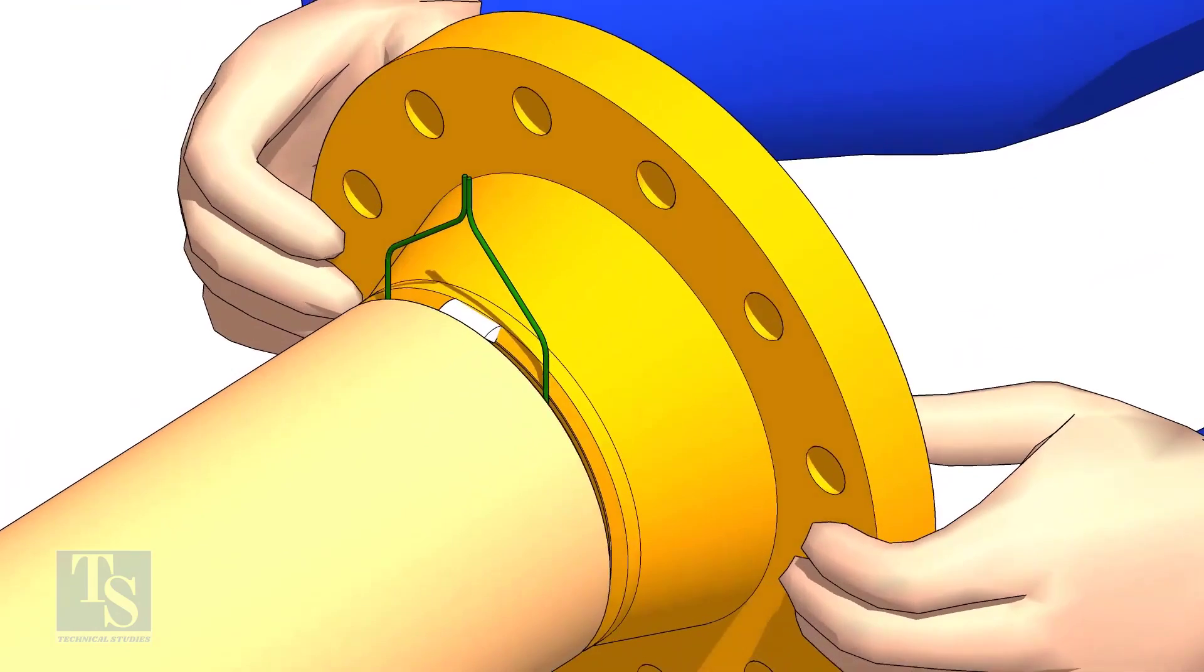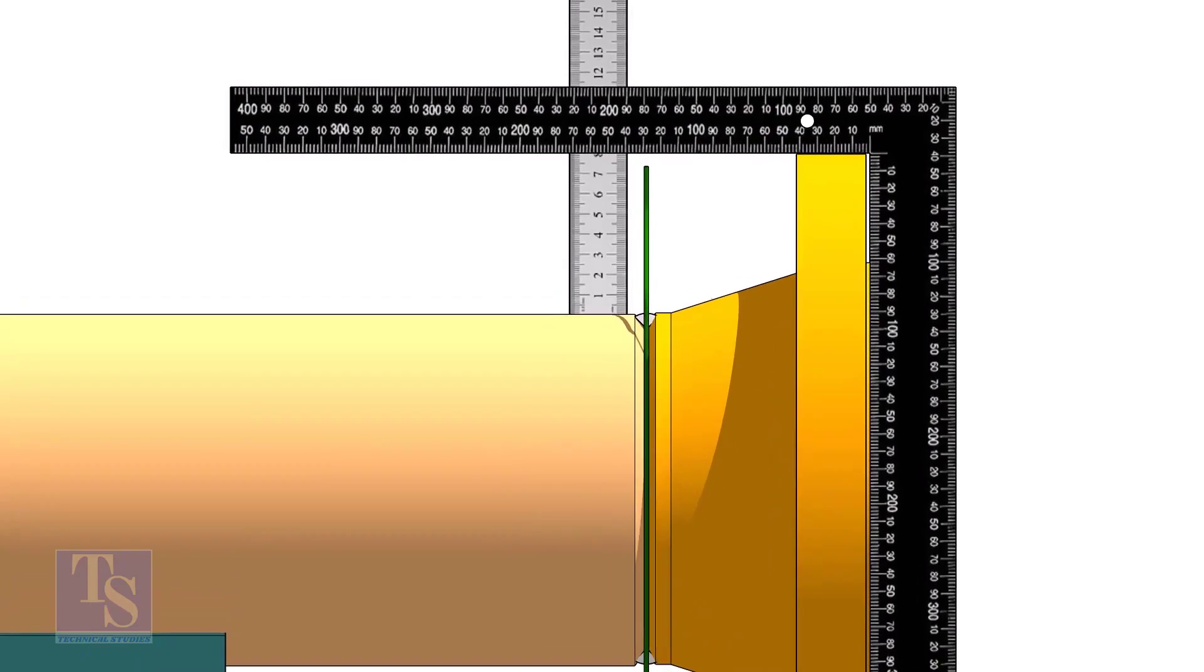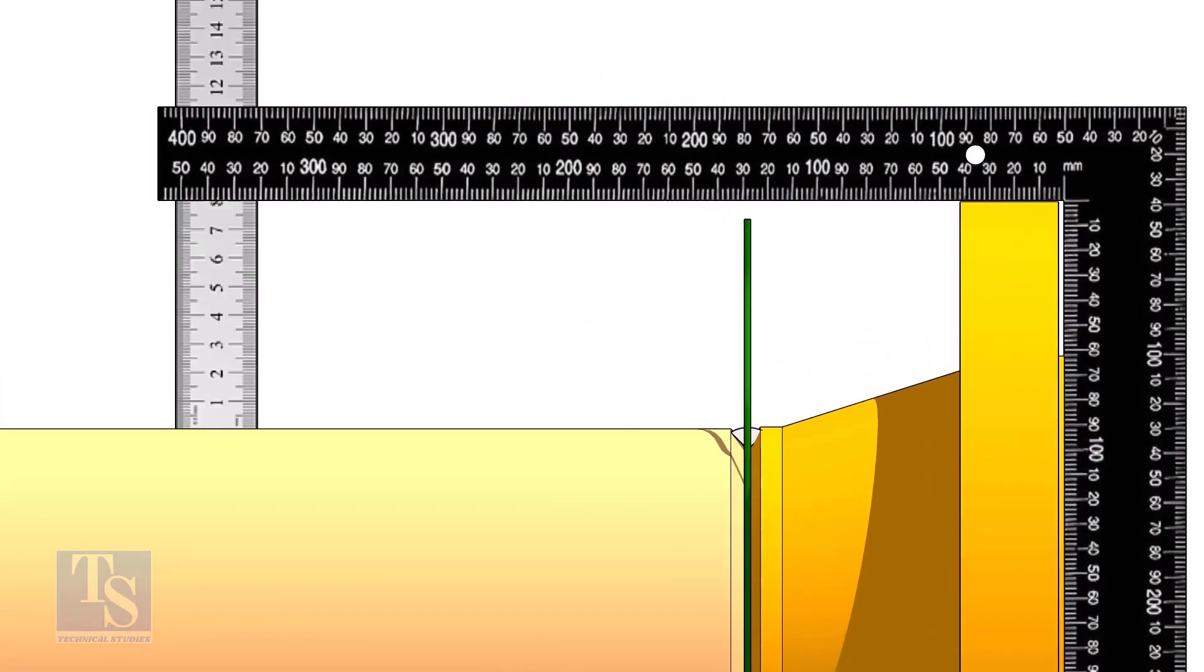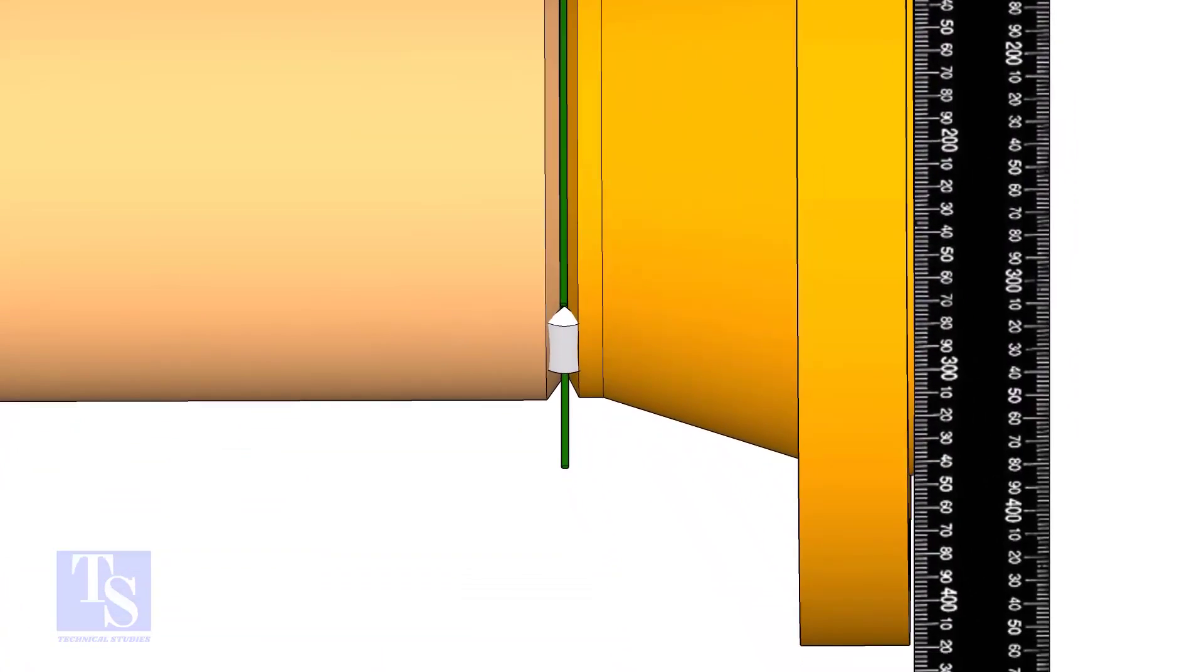Hold the flange with a gap rod in the joint. TAC weld on top side of the joint. Check the squareness of flange face to the pipe as shown. TAC weld at the bottom side of the joint.